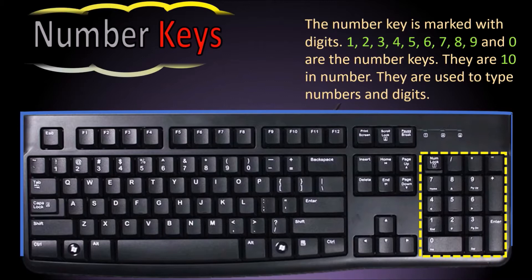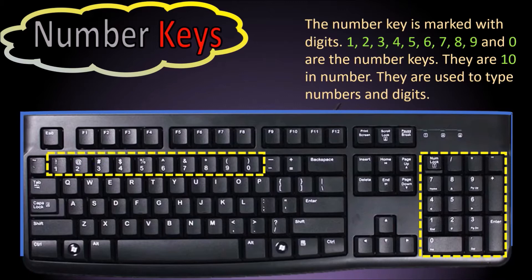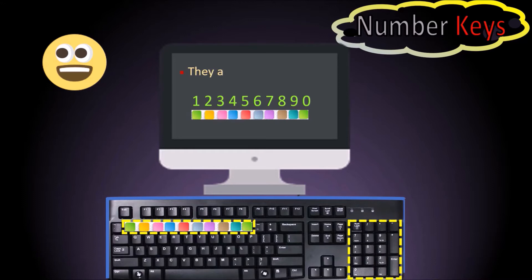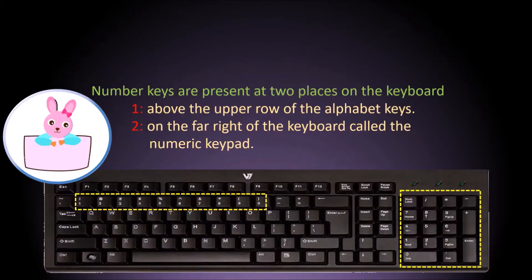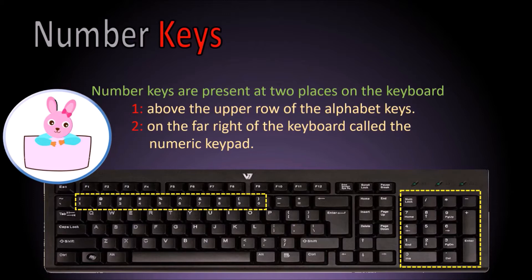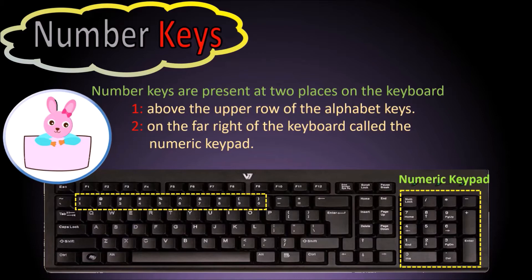The number keys are the keys marked with digits 1 to 9 and 0. They are 10 in number and are used to type numbers and digits. You can find number keys in two places: one above the upper row of the alphabet keys, and two on the far right of the keyboard.